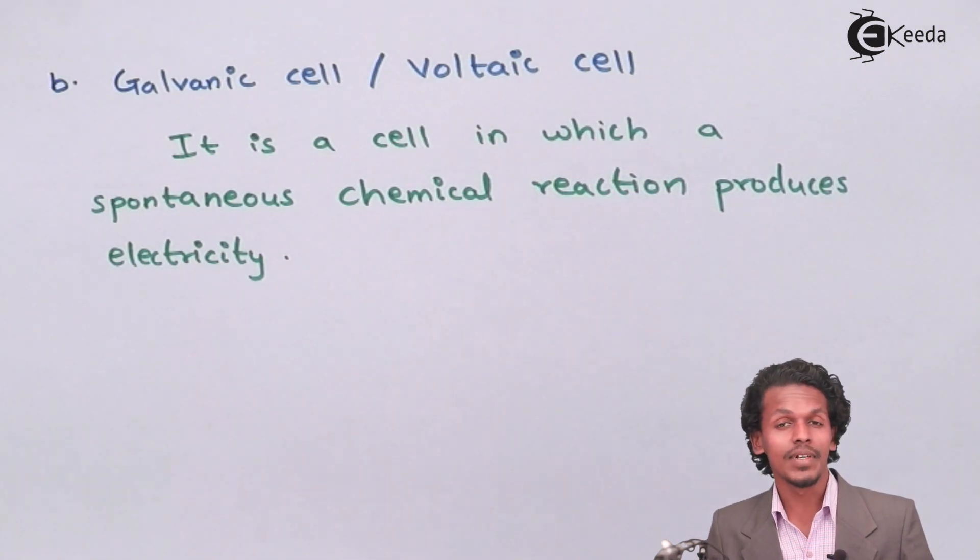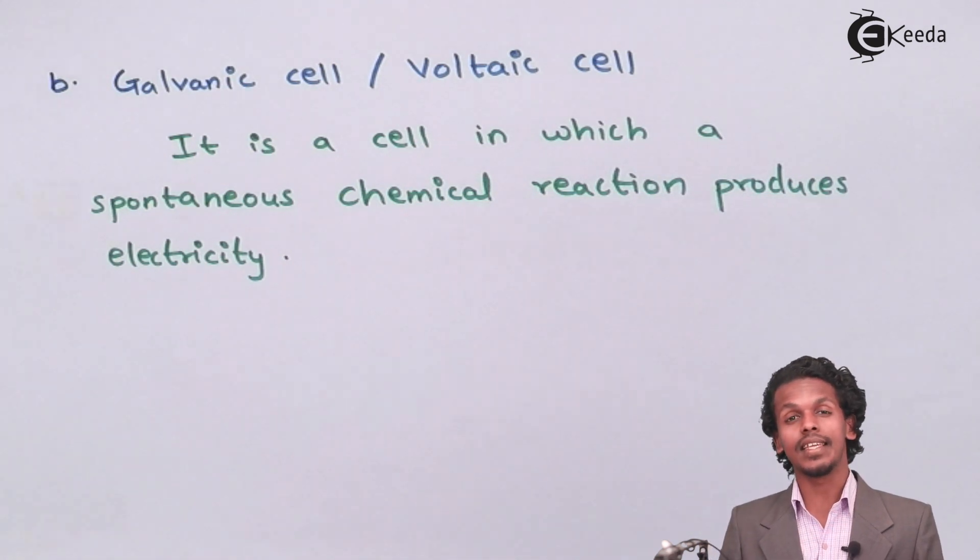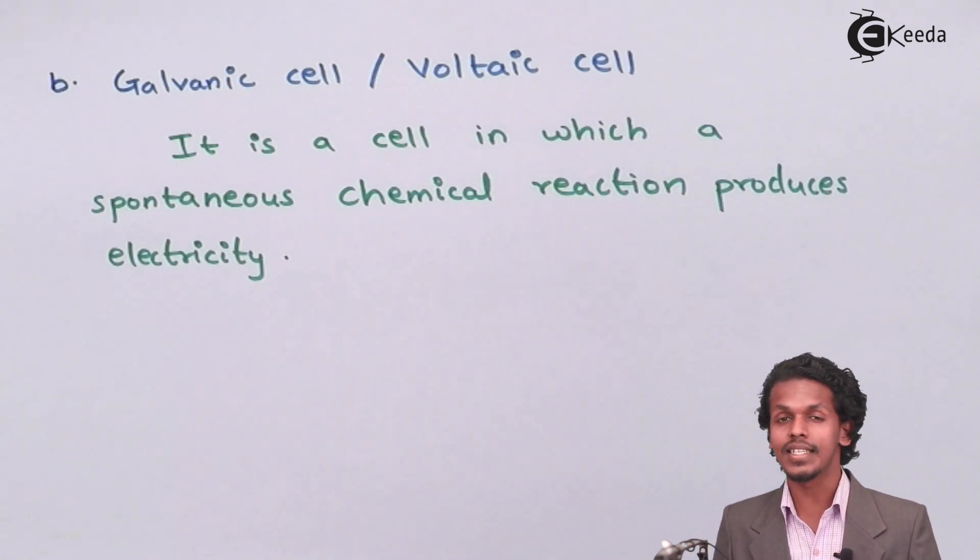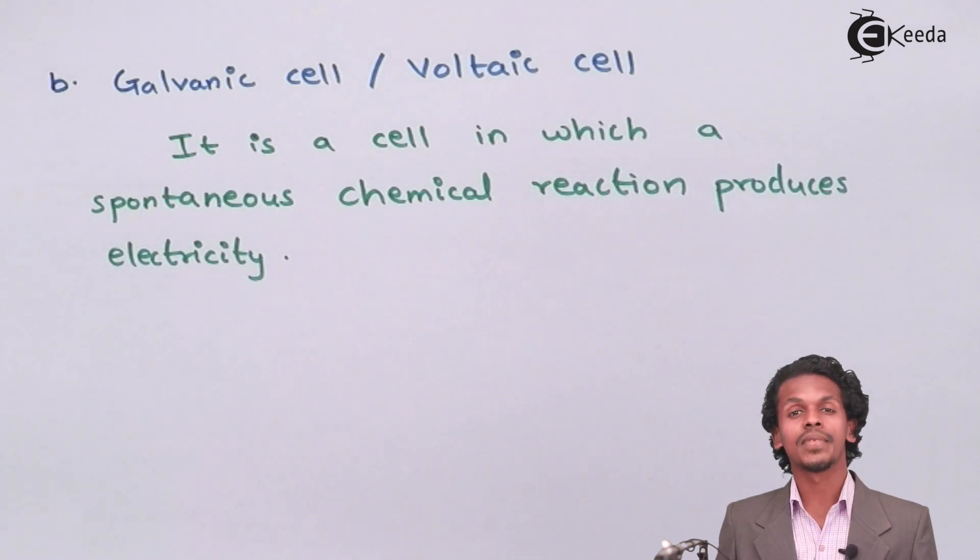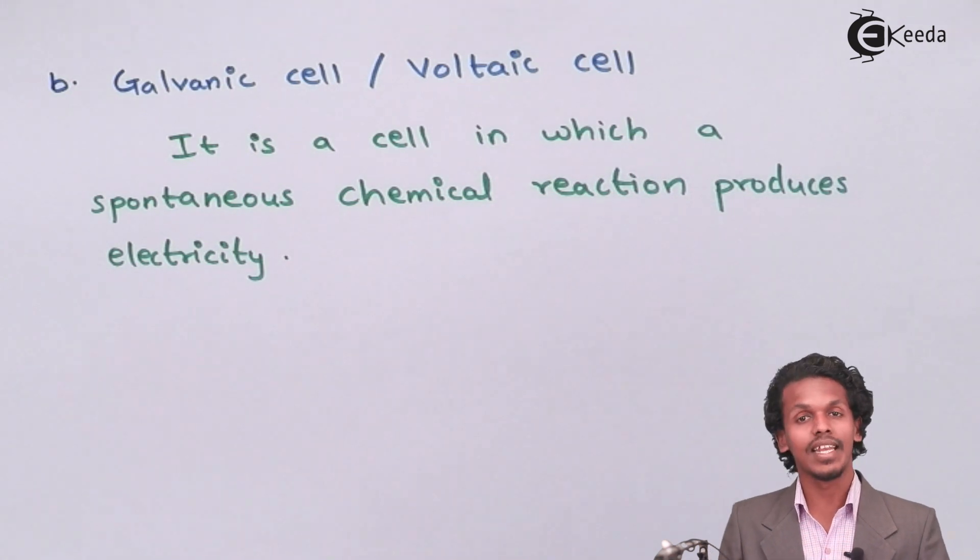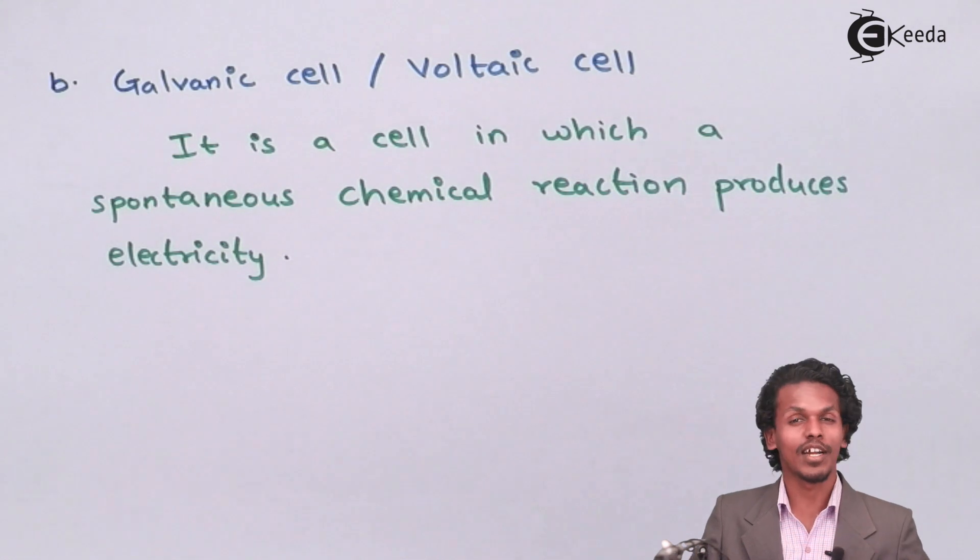So hence we have derived or we have mentioned that the electrochemical cells are of two types, that is electrolytic cell and galvanic cell. So based on this we are going to look further about each one in much detail. So this was a glimpse about what are electrochemical cells.